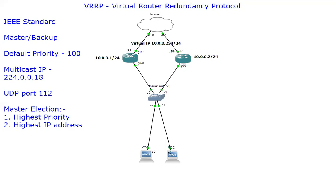For master election, the first criteria is the highest priority — whichever router has the highest priority is elected as master. If there is a tie, the highest IP address is considered for the master election. These are the basic details you need to know about this protocol.